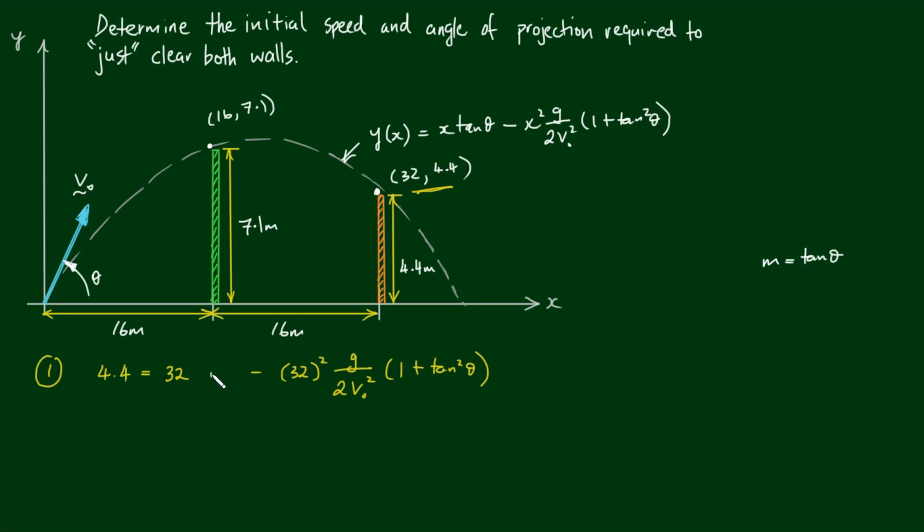So we have 32m and 32 squared g over 2v0 squared times 1 plus m squared. I'm going to rewrite 32 as 2 times 16. So we have 2 times 16m and 2 times 16 all squared. The reason why I'm doing that will become apparent.